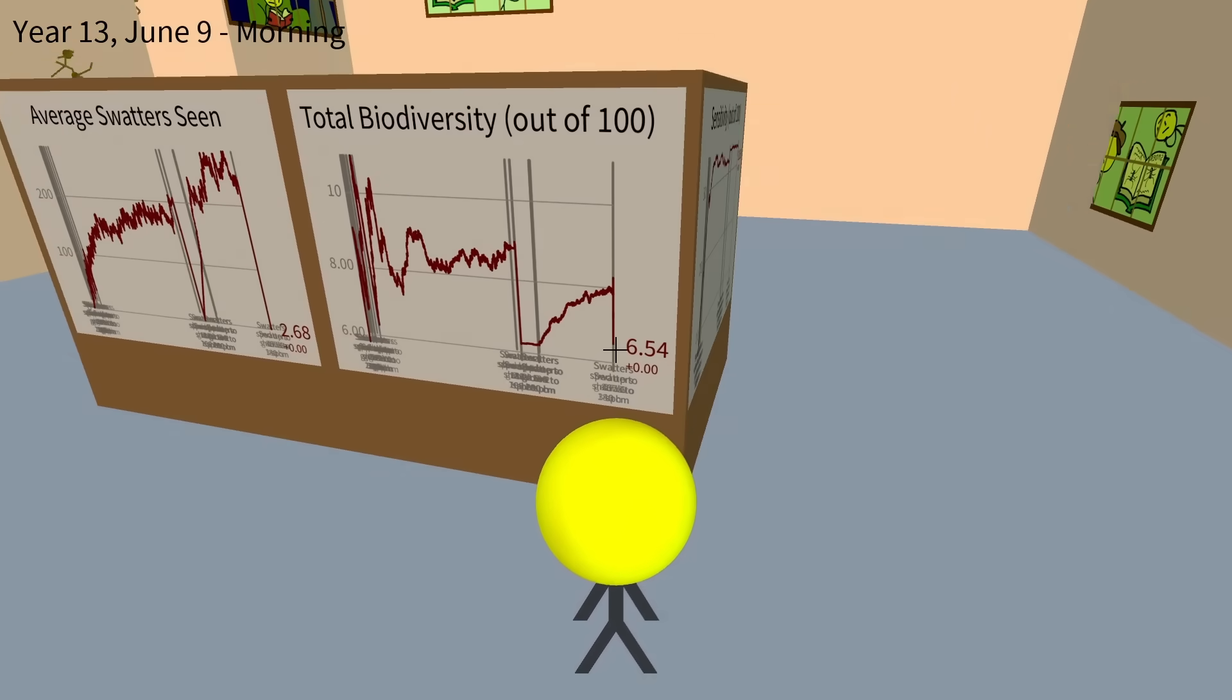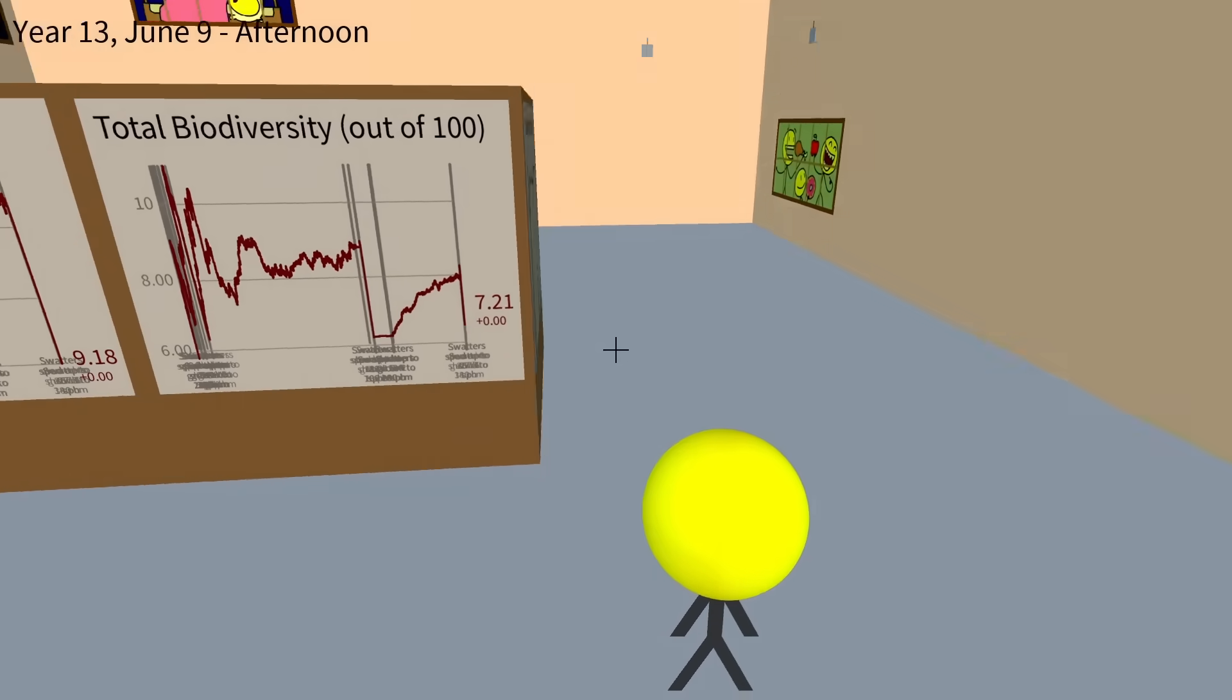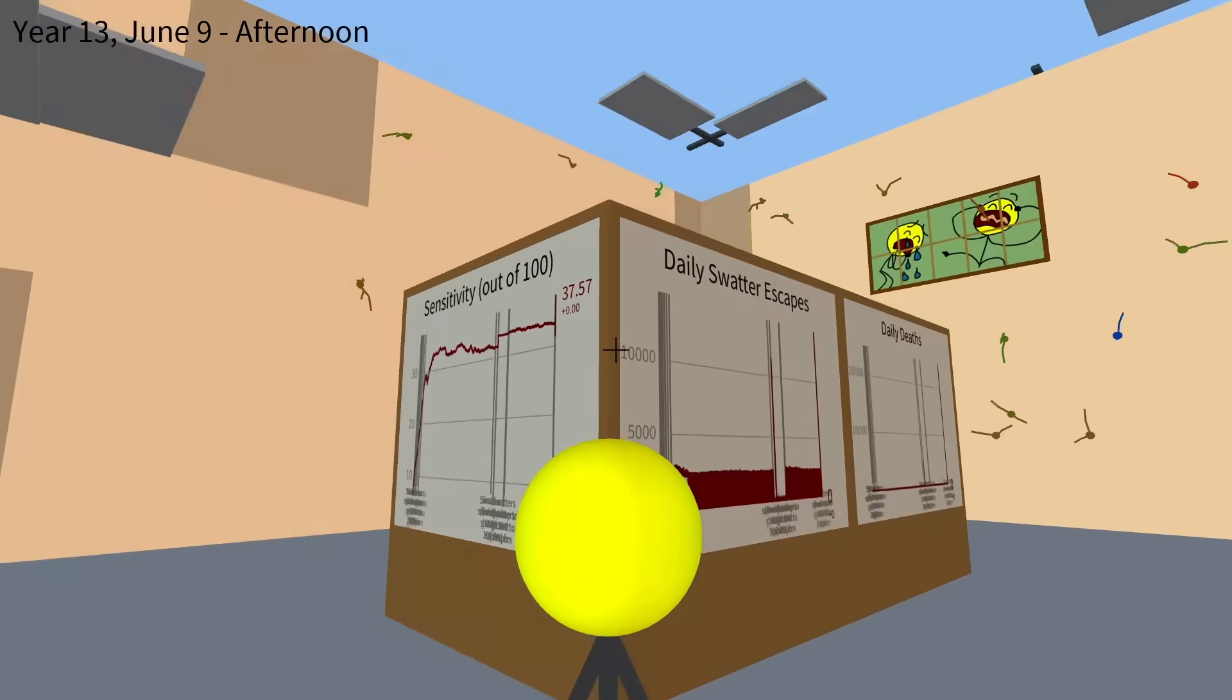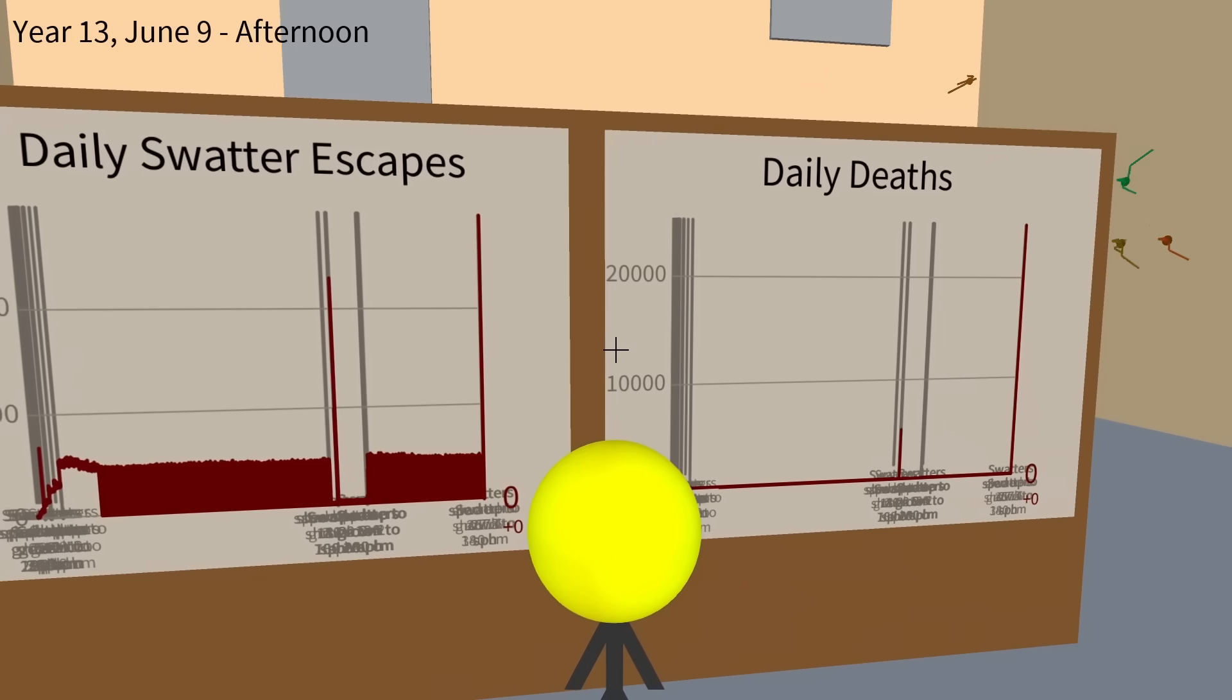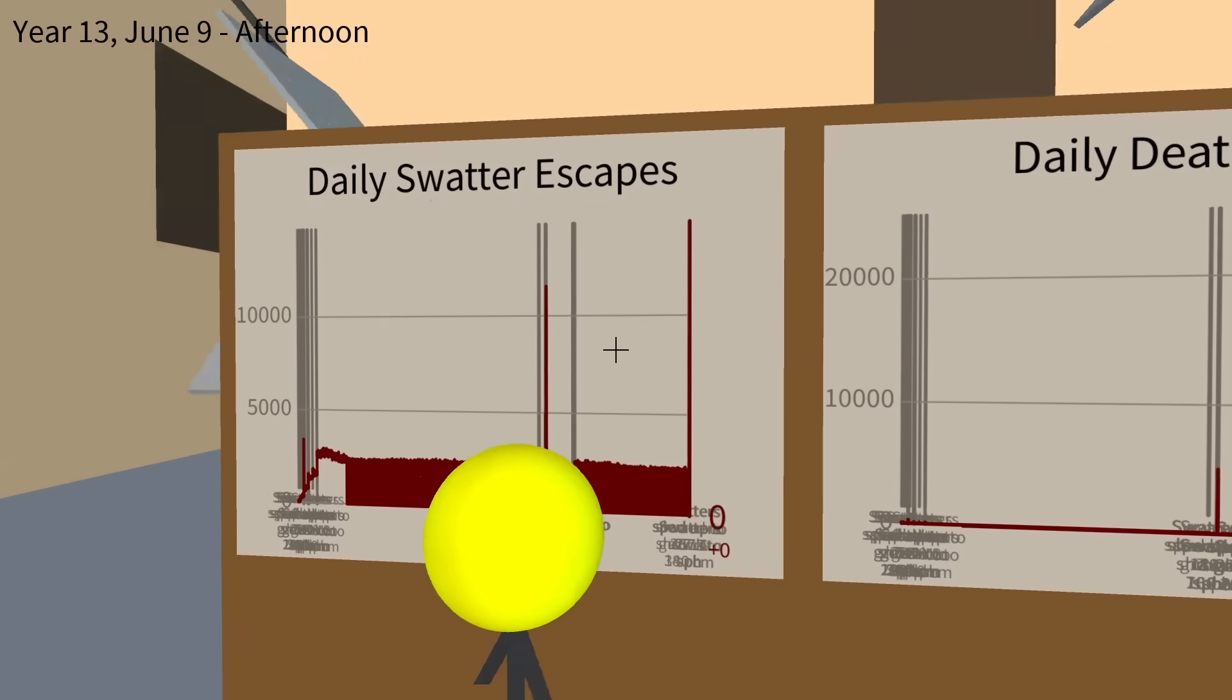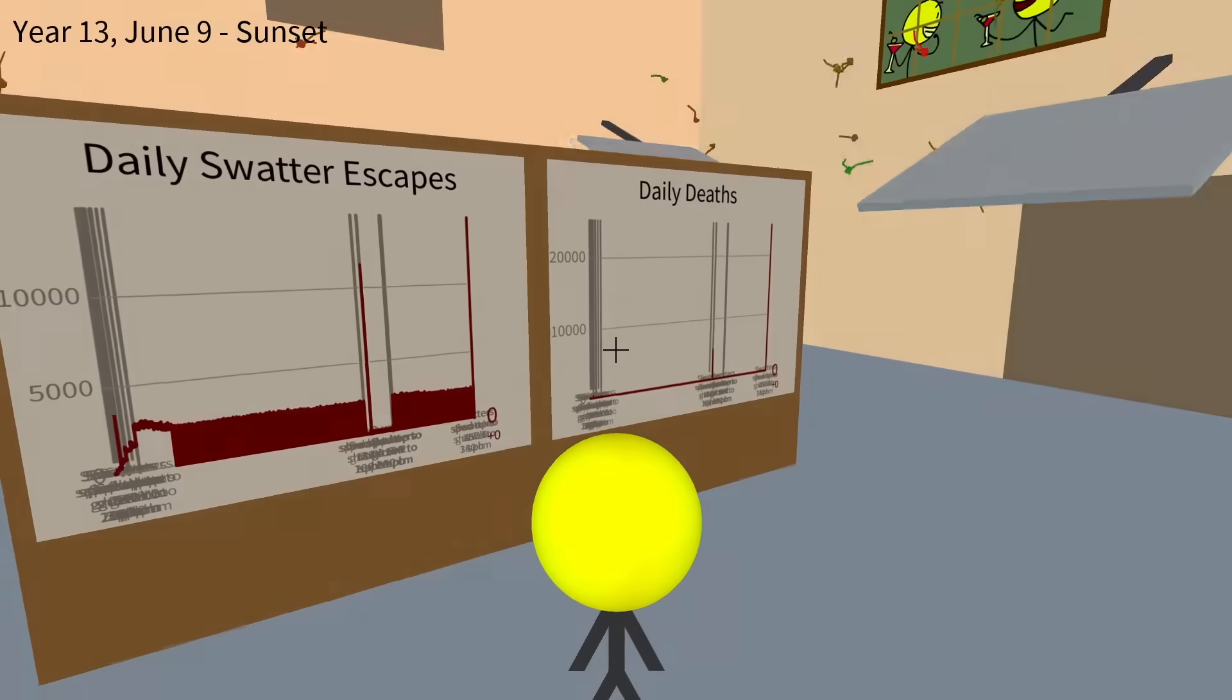Biodiversity is at a record low. Okay, if every spider got killed off except for one and that one spider replenishes the rest of the population, that would be a very low diversity group. Yeah, I think the graphs at this point are basically meaningless. Like, we got 20,000, 25,000 deaths in one day. Actually, more deaths than swatter escapes. We only got like 15,000 swatter escapes.